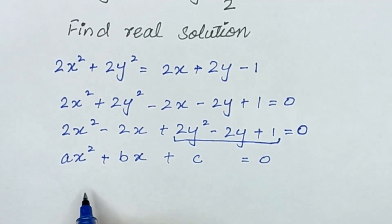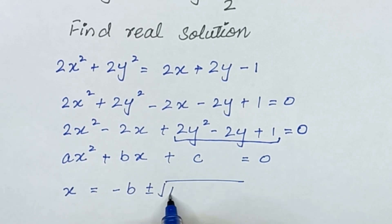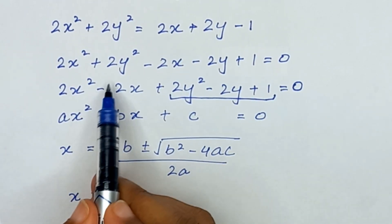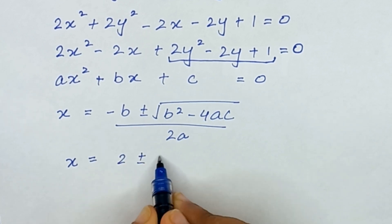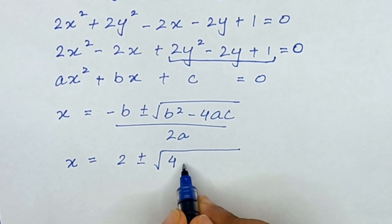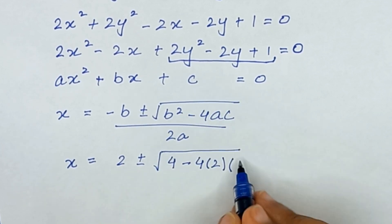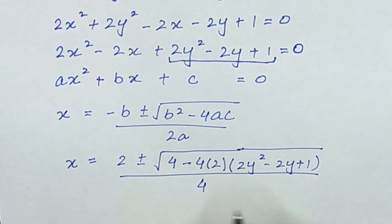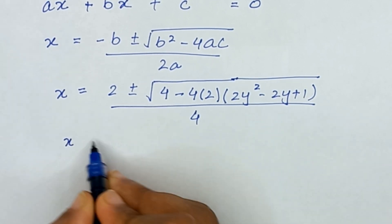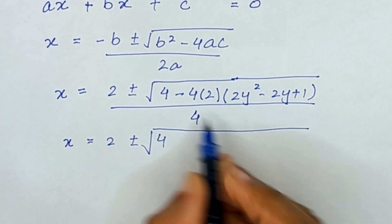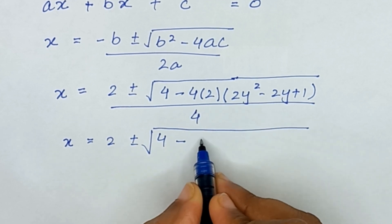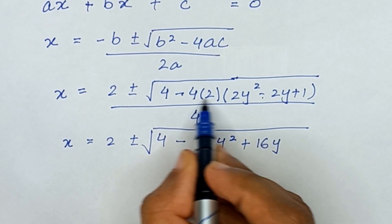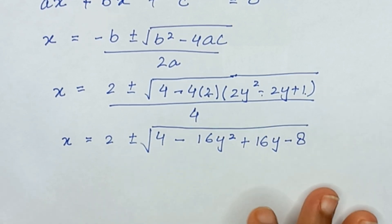I will apply the quadratic formula. So x = (-b ± √(b² - 4ac)) / 2a. Substituting: x = (2 ± √(4 - 4 · 2 · (2y² - 2y + 1))) / 4. Expanding inside the square root gives 4 - 16y² + 16y - 8.